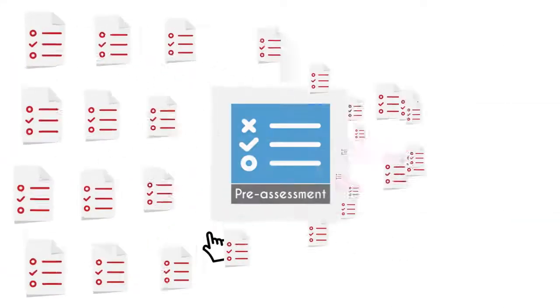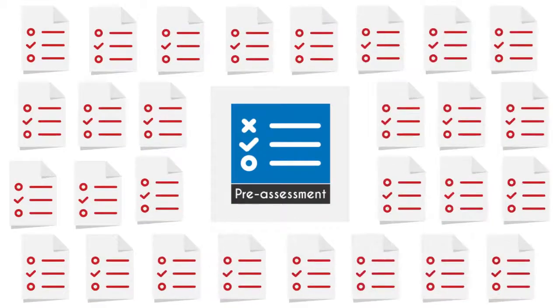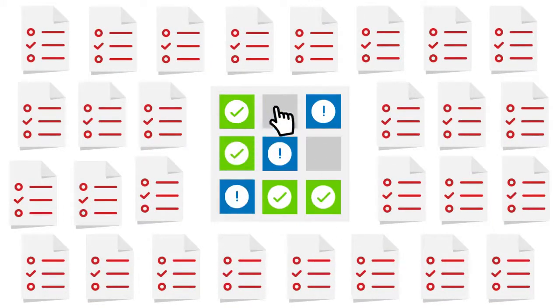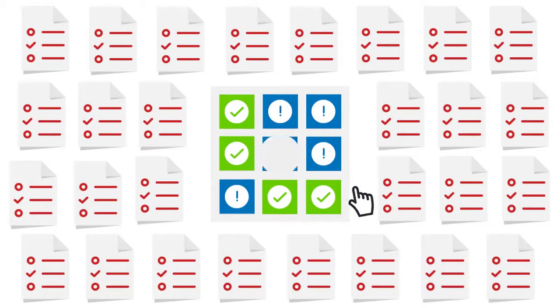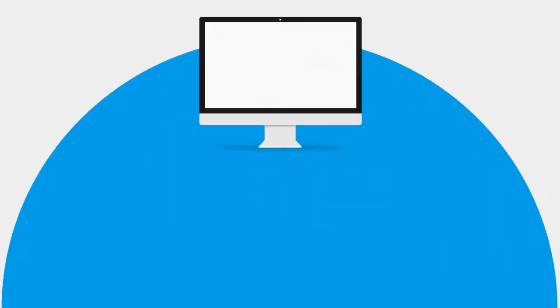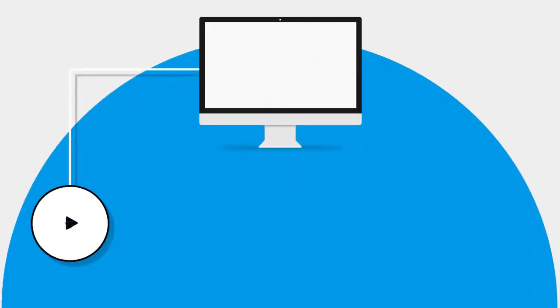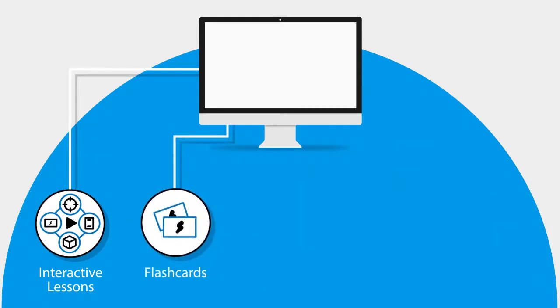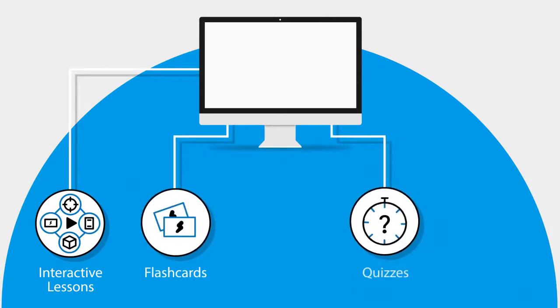In this UCertify course, you will receive 50 pre-assessment questions that will help you identify areas for improvement before you begin the course. It consists of three interactive lessons and learning resources with 80 flashcards, 45 quizzes, and 80 glossary terms.